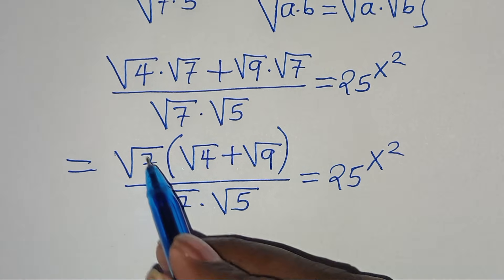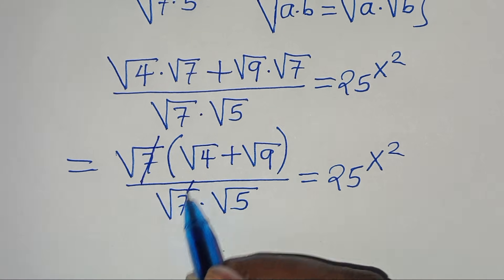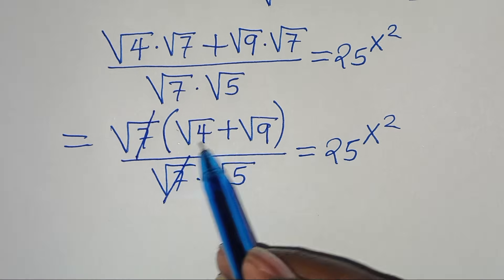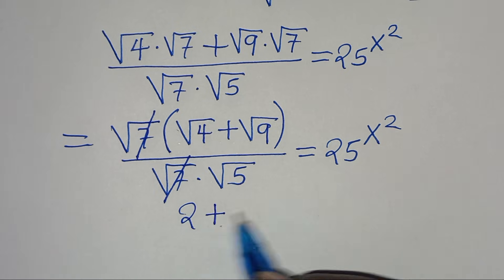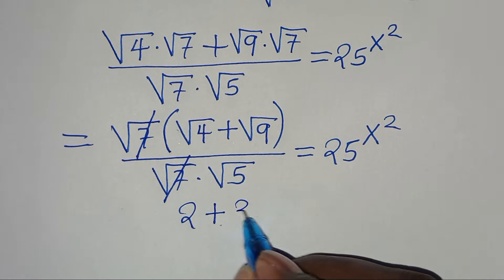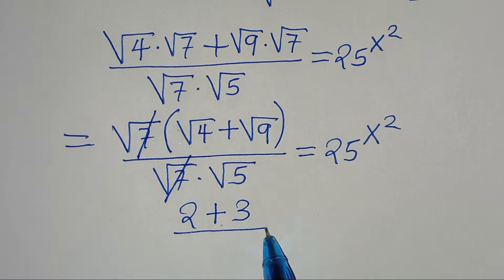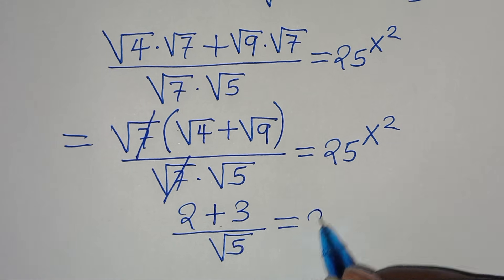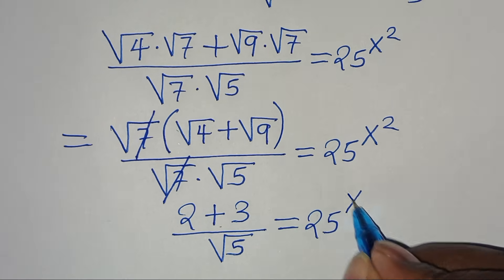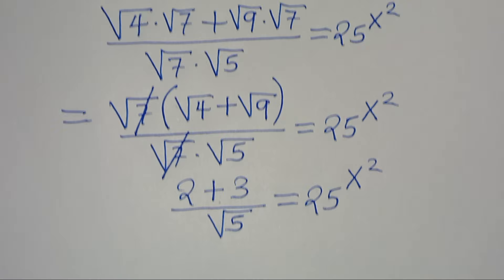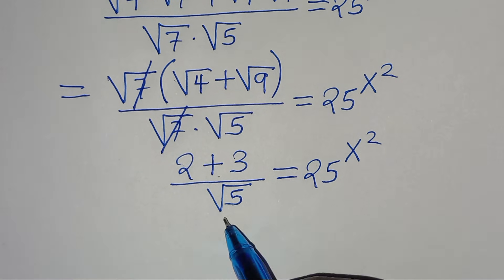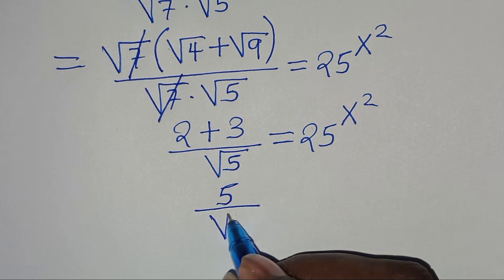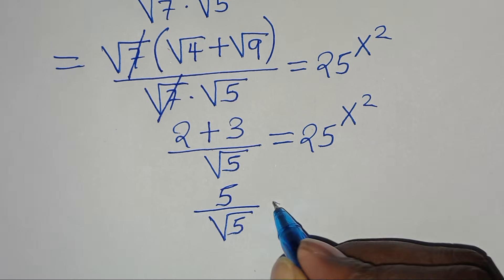The next step is that the square root of 7 in the numerator and the square root of 7 in the denominator simplify, so that now in the numerator we have the square root of 4, which is 2, plus the square root of 9, which is 3. So we have 2 plus 3 divided by the square root of 5, which equals 5 divided by the square root of 5. This is equal to 25 raised to the power of x squared.